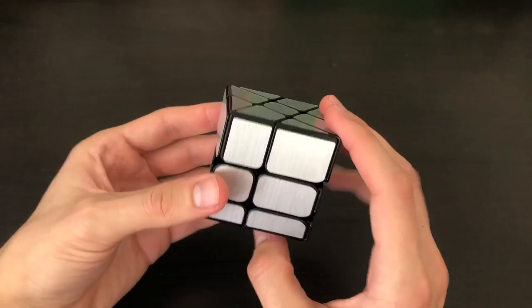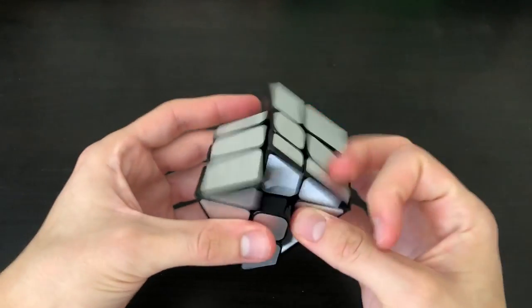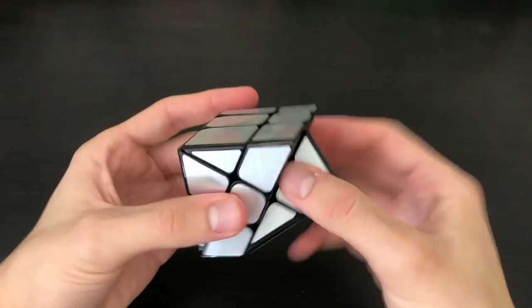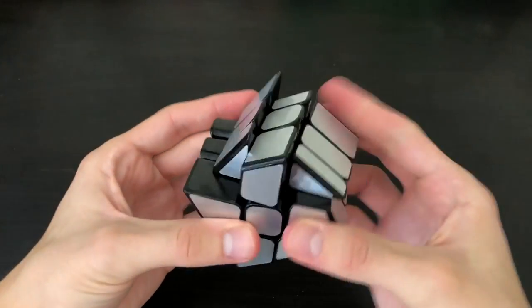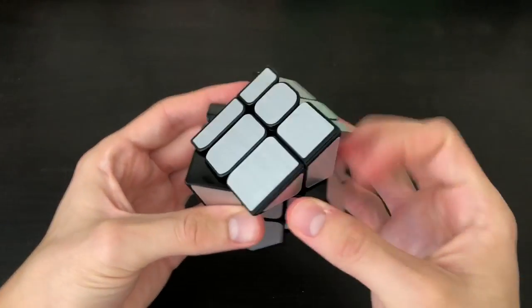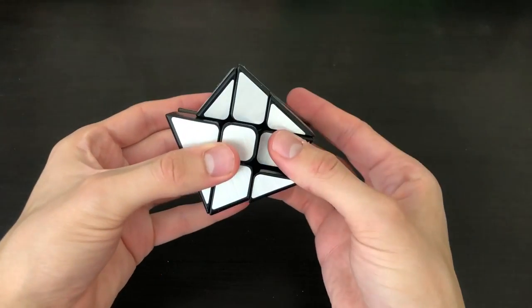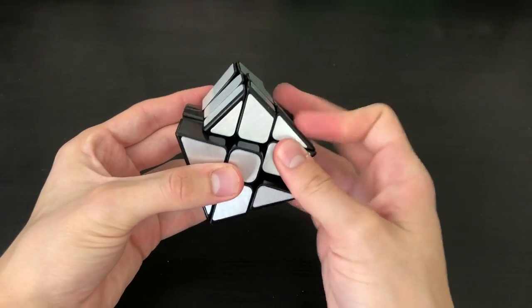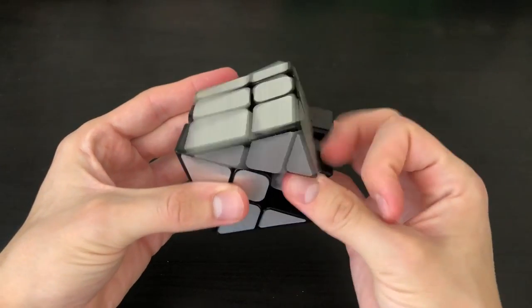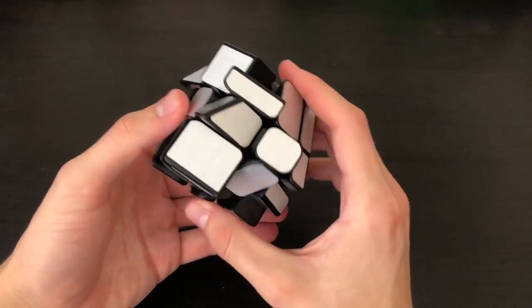So going into first turns it's pretty smooth, kind of what you'd expect. Kind of hard to finger trick just because these pieces are different sizes and there's not really a lot to grab on to. As you can see here I'm just trying to do my normal turns and it's kind of hard to reach them.